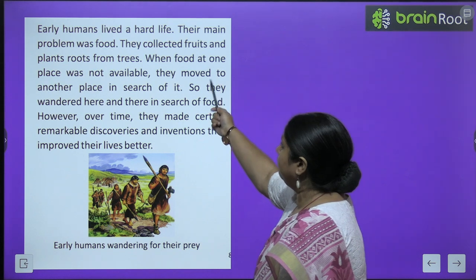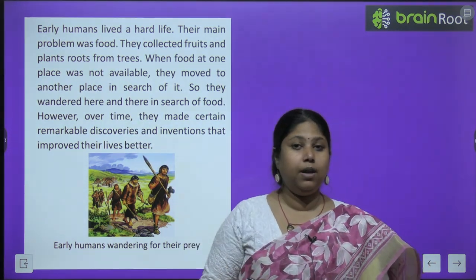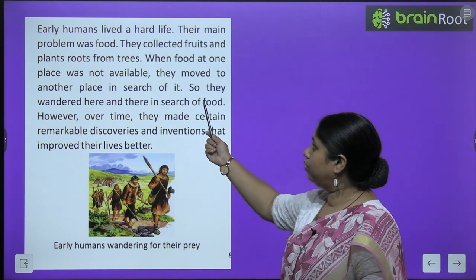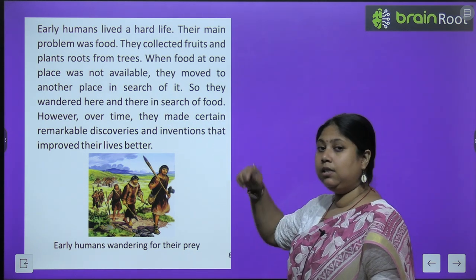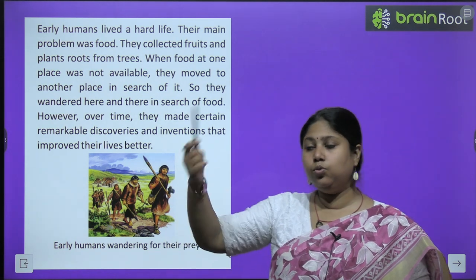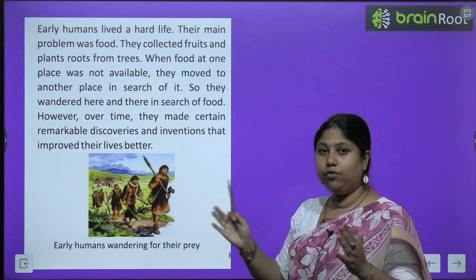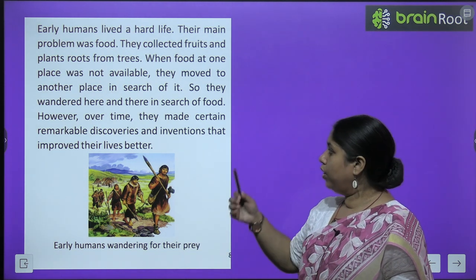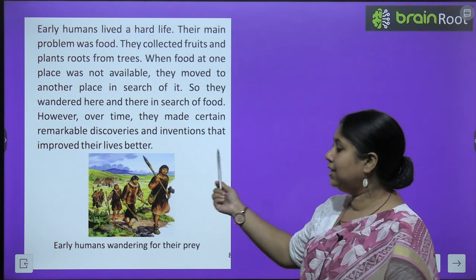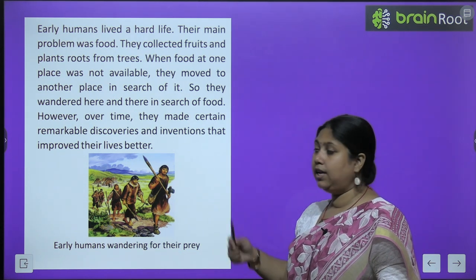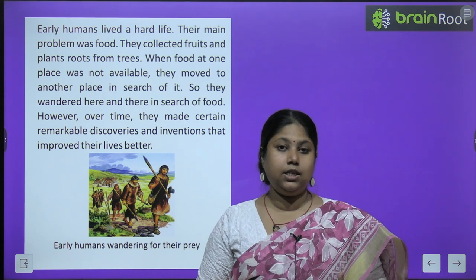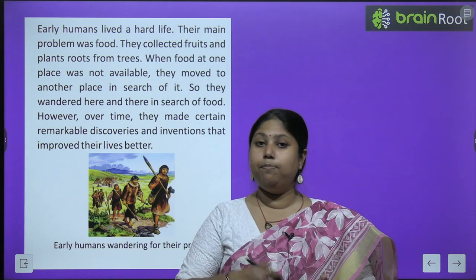Early humans lived a hard life. Their main problem was food — woh ek jagay se dusri jagay khane ko dhoomte huye bhatakte rahate thay. They collected fruits and plants from trees. When food at one place was not available, they moved to another place — so they wandered, moving from one place to another, roaming here and there in search of food. However, over time, they made certain remarkable discoveries and inventions that improved their lives for the better.